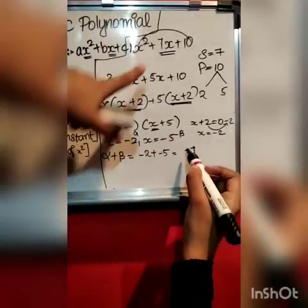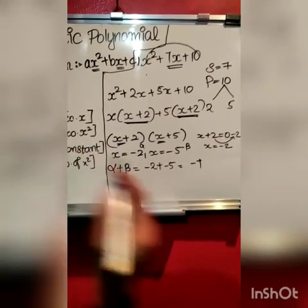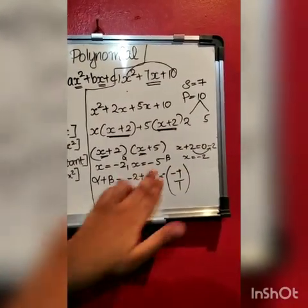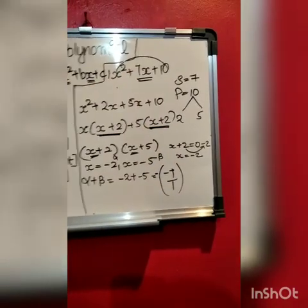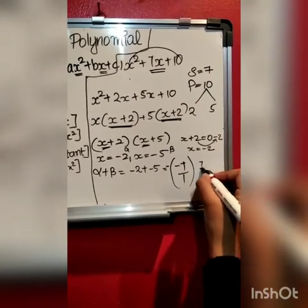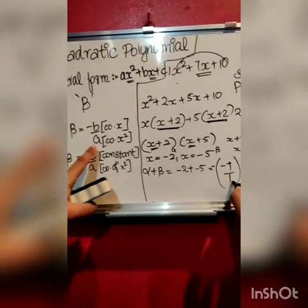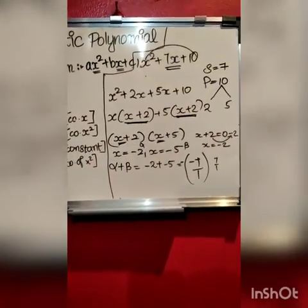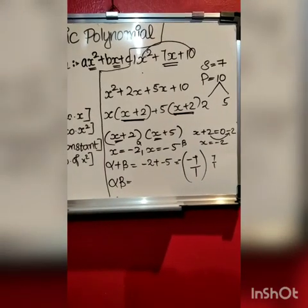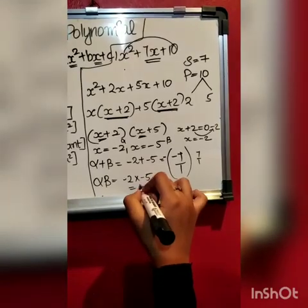So minus 7 equals minus b, where b corresponds to the coefficient in x² plus bx plus c. Since a equals 1, minus into minus gives plus: so minus b by a is plus 7 by 1, which is 7. That is the coefficient of x divided by the coefficient of x². And for the product: minus 2 into minus 5 is 10. That is 10 by 1, which equals 10 — c is the constant and a is the coefficient of x².